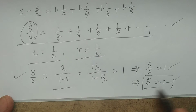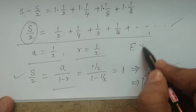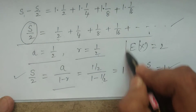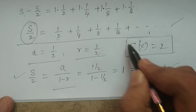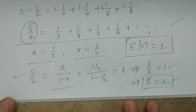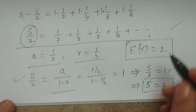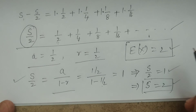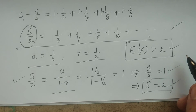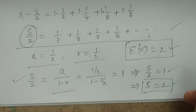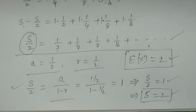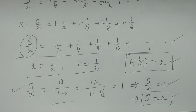Therefore, the expected value of X is 2. In this problem — if a coin is tossed until a head appears — the expected number of tosses required is 2. Hope you understand. Thank you so much.